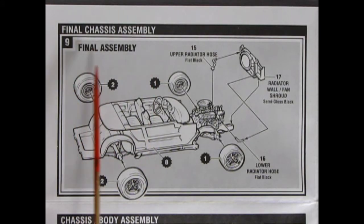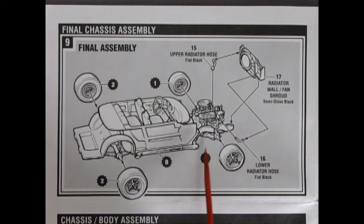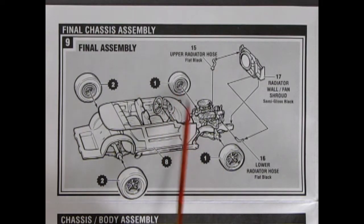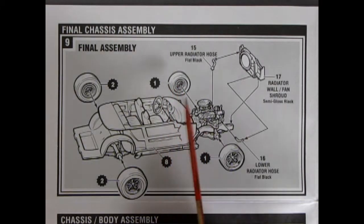And, turning the instruction sheet over, we get our final chassis assembly, step number nine. And here, we will be putting our wheels onto those axle pins. Remember to carefully put just a little tiny drop of glue inside, and try not to get it around where the wheel will be bearing on that inner pin.